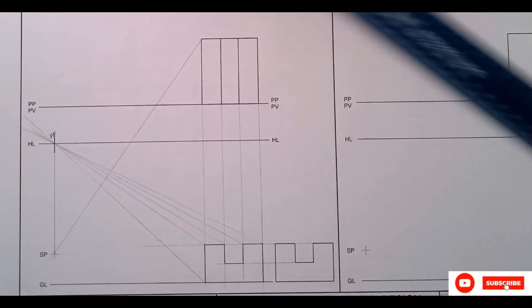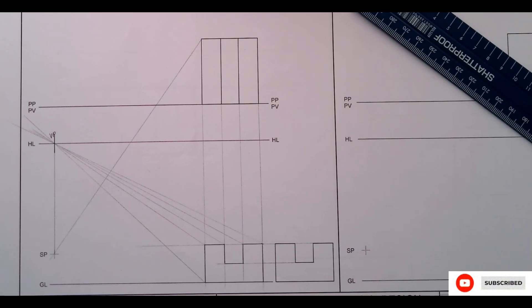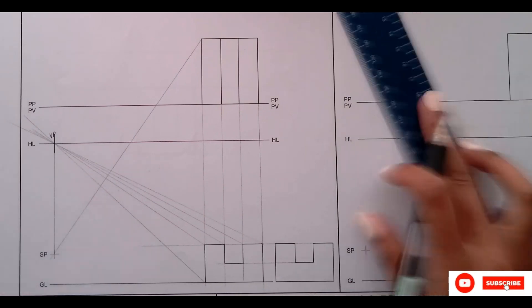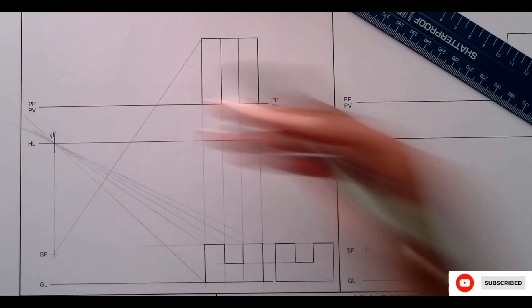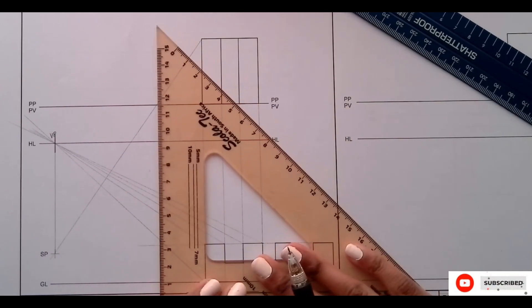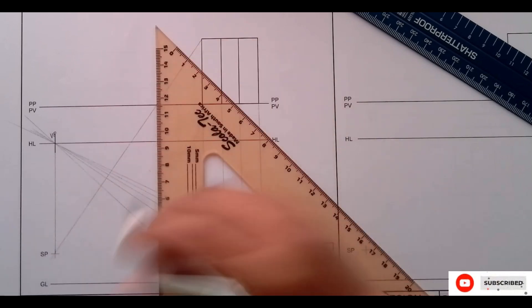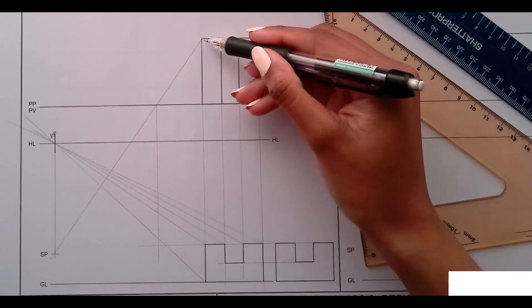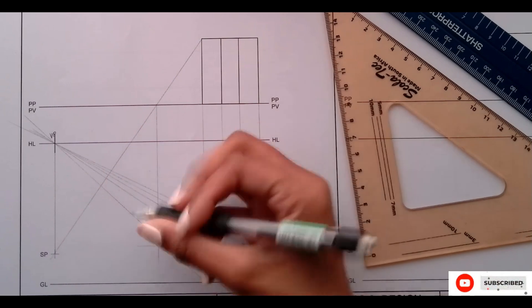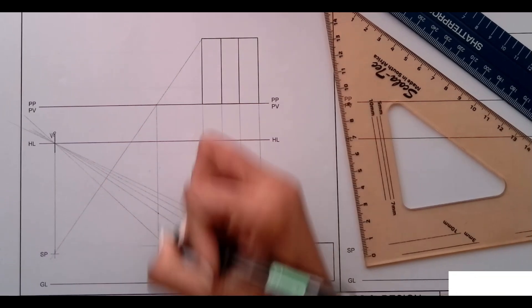So there. So it's touching the picture plane. I bring it straight down. Then this is for this line. So that means I have a point here and a point here.